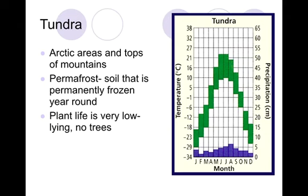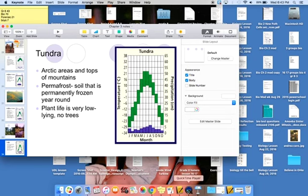Last, we have our tundra. These are the arctic areas and the tops of mountains — areas where temperatures are pretty cool most of the year. There are times of the year when temperatures get warmer, but there is a permanent frost in the ground called the permafrost, just a few feet below the surface, and it stays frozen all year long even when it is warm outside. It never stays warm enough long enough for that to melt. Because of that, the plant life is very low to the ground because that's where the root system can be supported, and there are no real trees because roots can't get through that permafrost. Those are all of our biomes, and that's the end of our notes — those biomes will all be on the test.